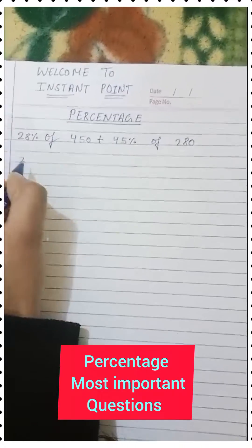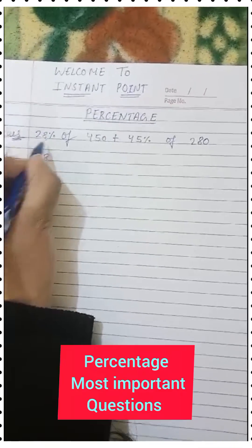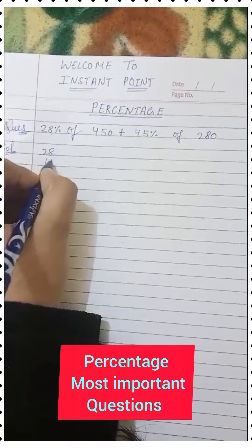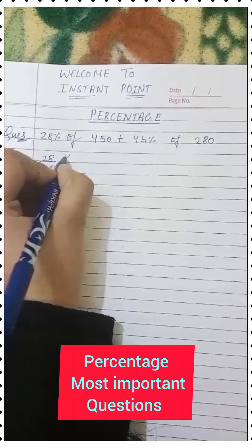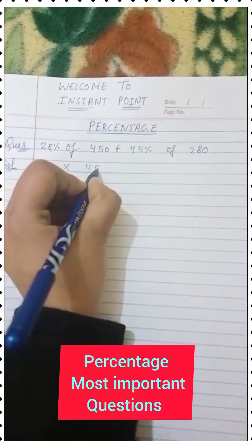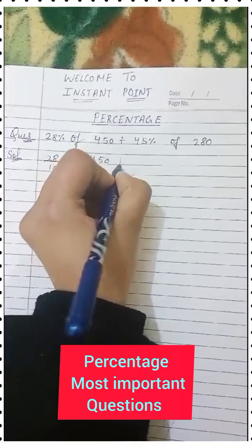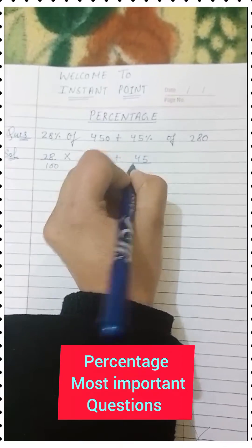We have 28%, which means 28 upon 100. 'Of' means multiply. So 28% of 450 plus 45%, which means 45 upon 100, of 280. This is what we have to solve.